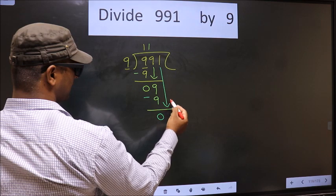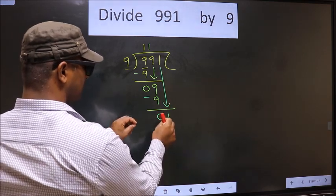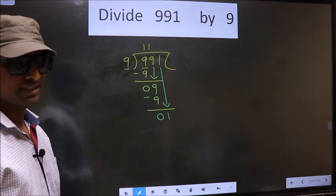Now you bring down the next number. So 1 down. And this is where the mistake happens. And the mistake is this.